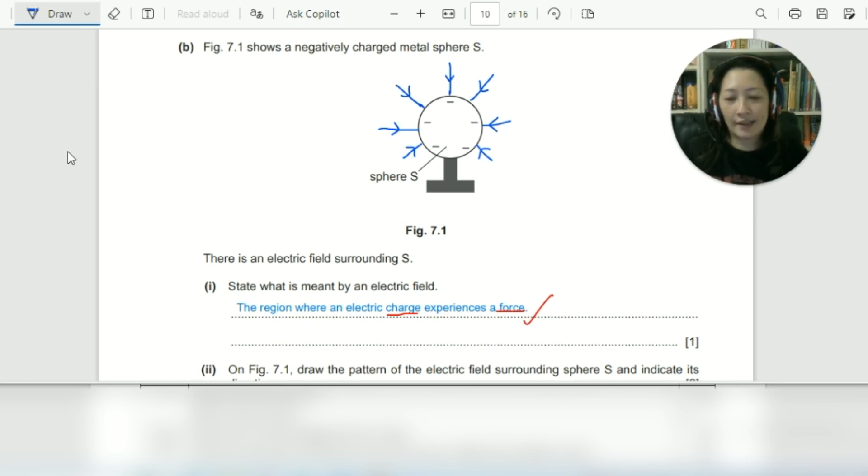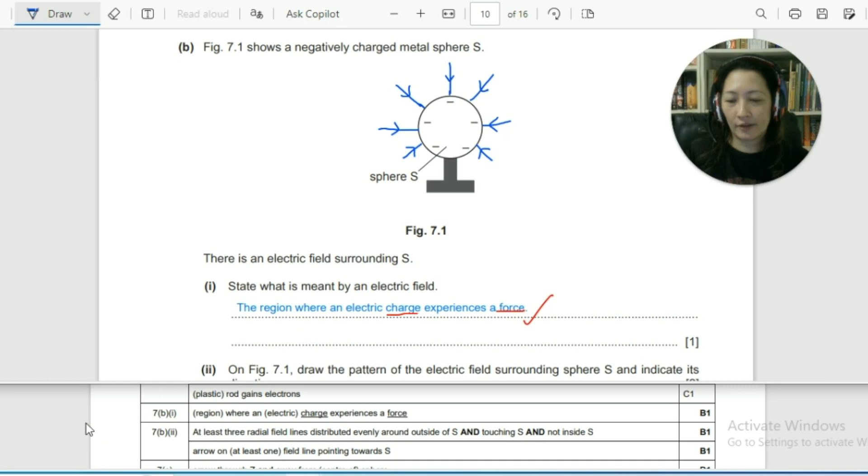Let's have a quick check against the answer scheme. So you can see that the answer scheme says that we need to have at least three radial lines distributed evenly around outside of S and touching S and not inside S. So this is correct. Yeah, we've got the lines outside touching the sphere. But yes, you can't go inside because the field is on the outside of the sphere, not on the inside. That's why the mark scheme is so particular. All three conditions must be fulfilled before you can even get one mark.